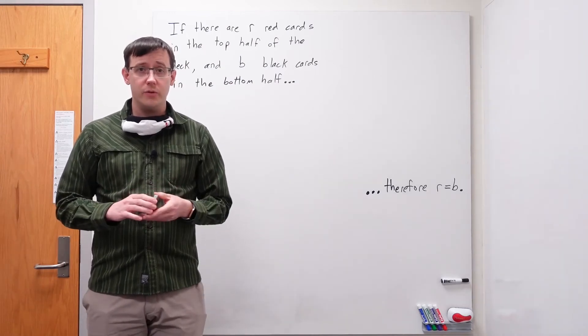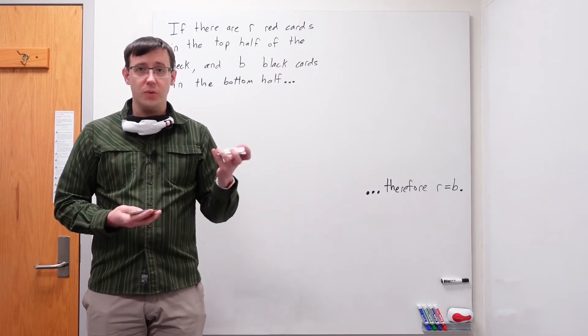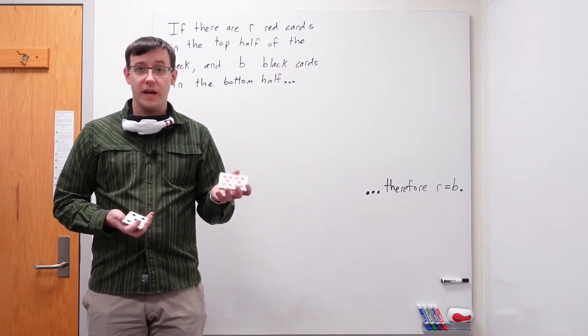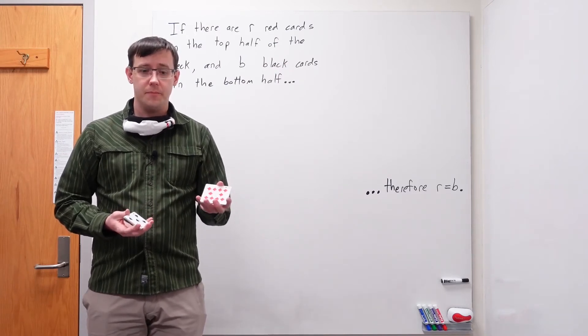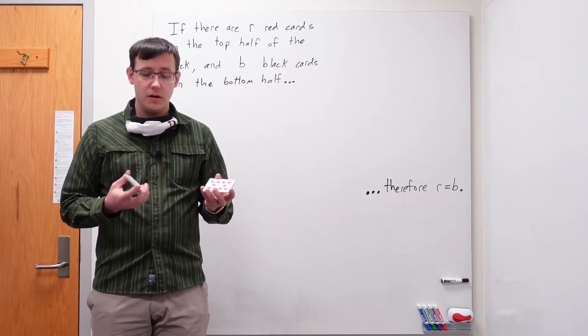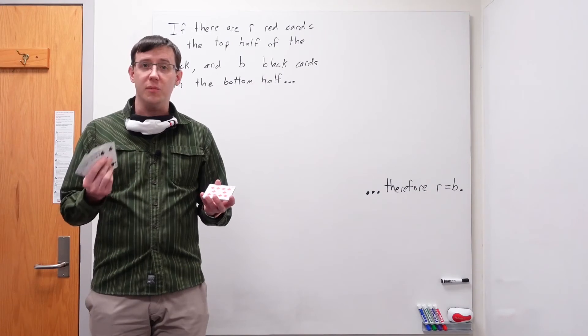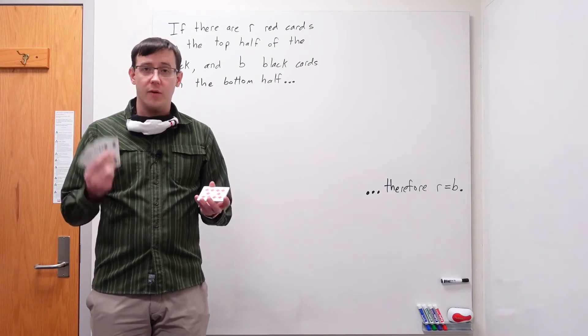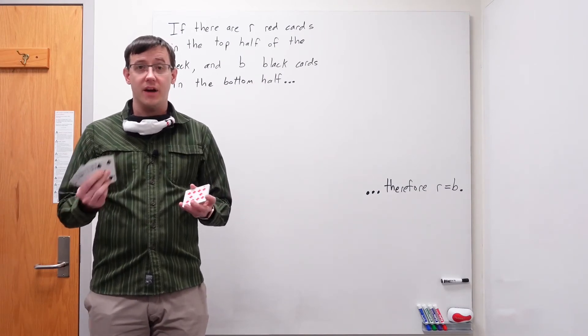And then we sorted through the top half of the deck to pull out the red cards, and there were r of them. But of the 26 cards in the top half of the deck, all the rest of them must be black. So we know how many black cards we have in the top half of the deck.